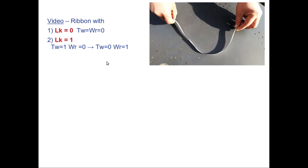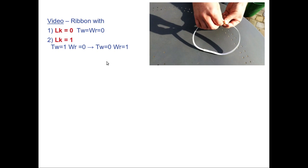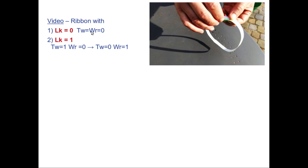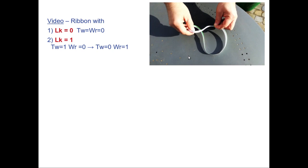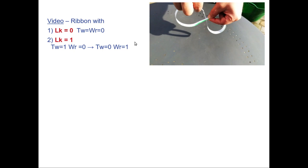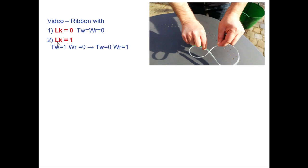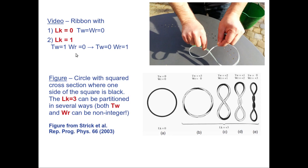Let me show this video again. We start here — I close the two green parts on the side. This is the first case: linking number equals zero, twist is zero, writhe is zero. Then I go into a situation where linking number equals one, twist equals one, and writhe is again zero. I can transform it — keeping it sealed — into a state where the twist is zero and the writhe is one. So I can partition the linking number one into two different states.